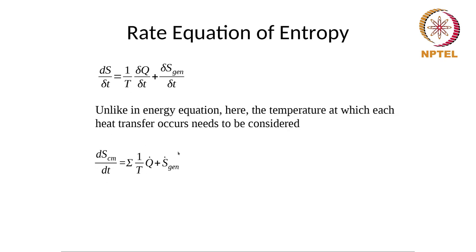The rate equation of entropy for a control mass becomes dS/dt = Σ(1/T · Q̇) + Ṡ_gen. Unlike the first law where we did not need a summation, here we need Σ(Q̇/T) because T is different for each heat transfer. If a system has multiple boundaries with heat transfer, the temperature to consider for each is the temperature at that boundary.